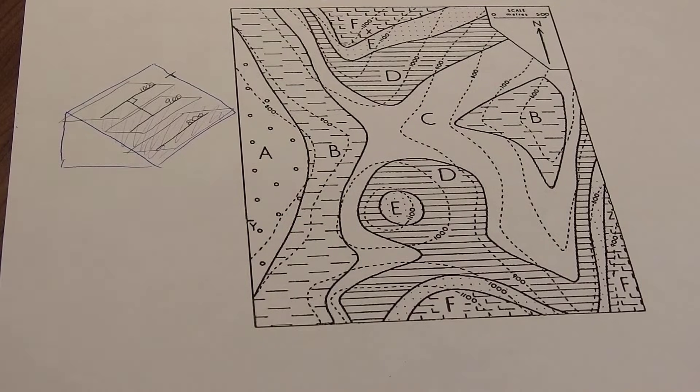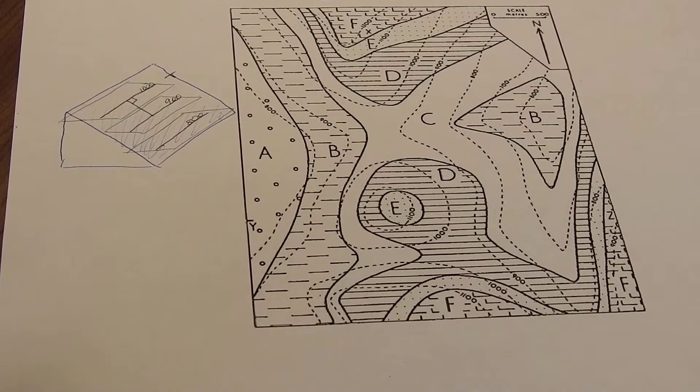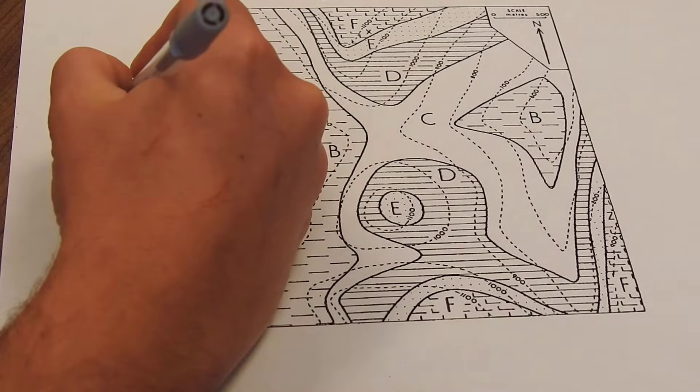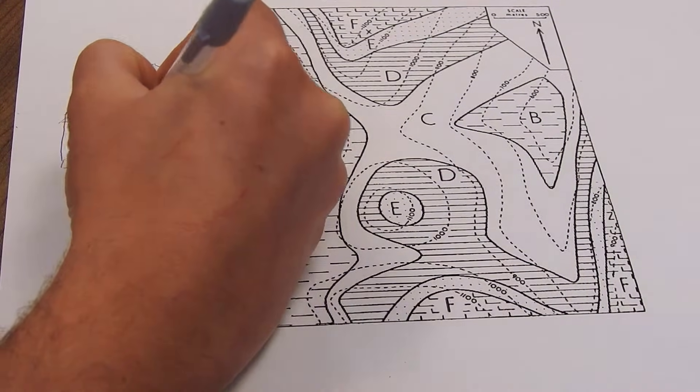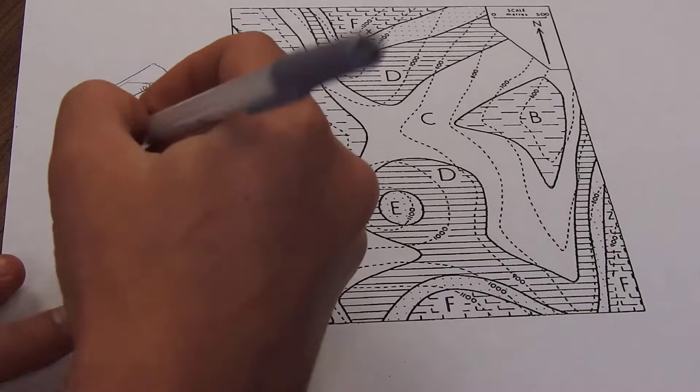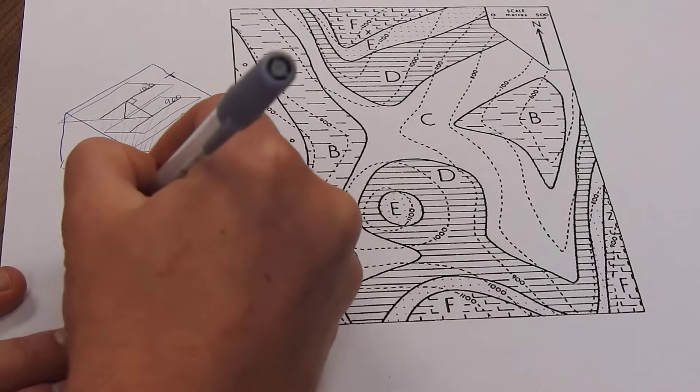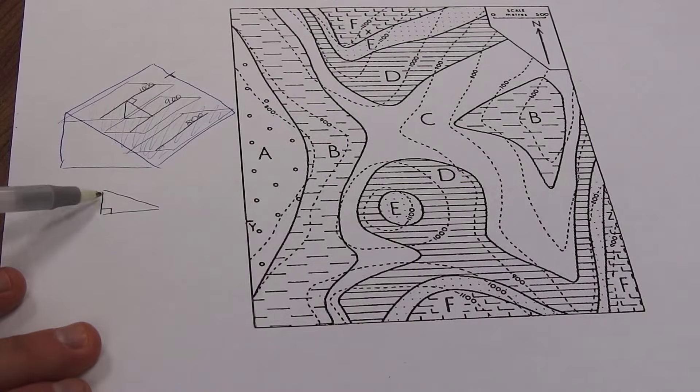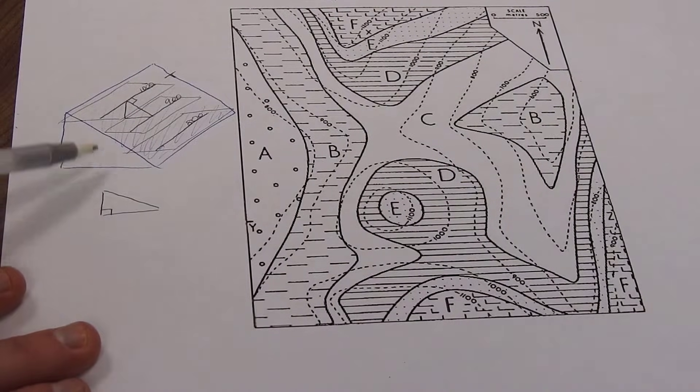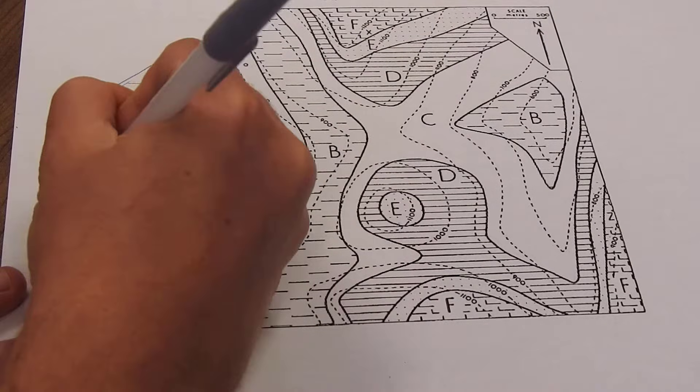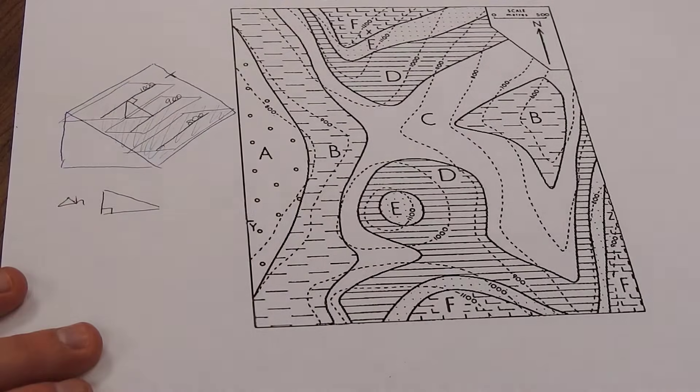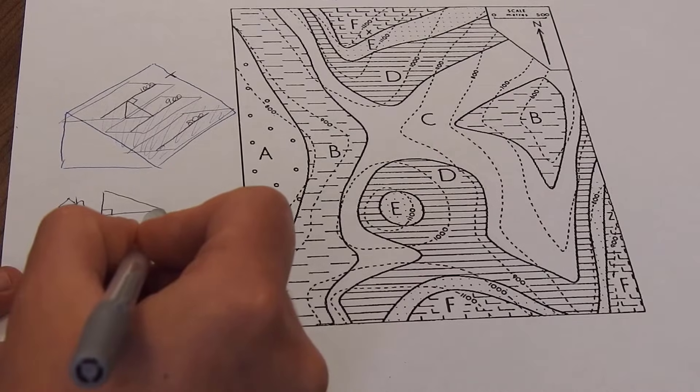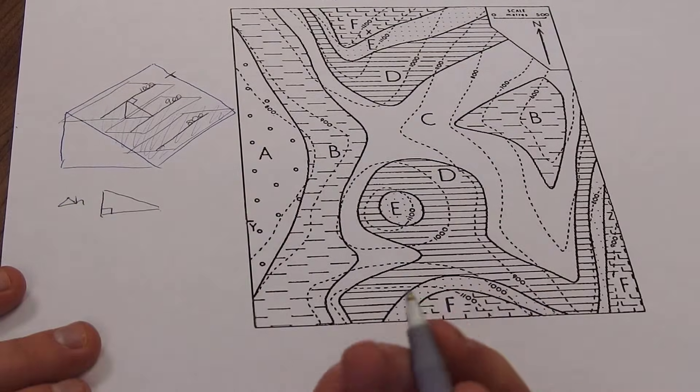So this gives us an idea of what method we might be using. That we need two strike lines. We could draw in some dip direction. And then we can use that to make a little triangle. So here our triangle is going to be a right triangle where the height of the triangle is going to be the difference in the height of the strike lines.